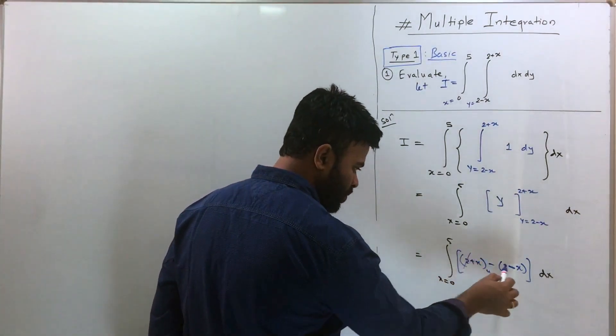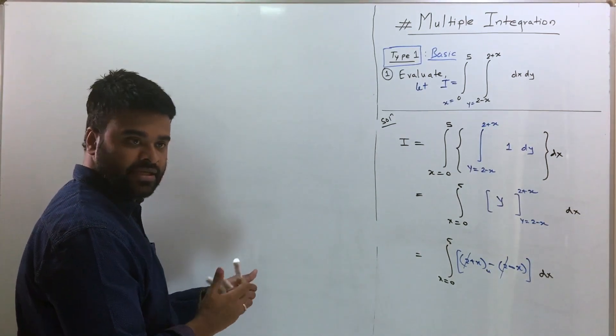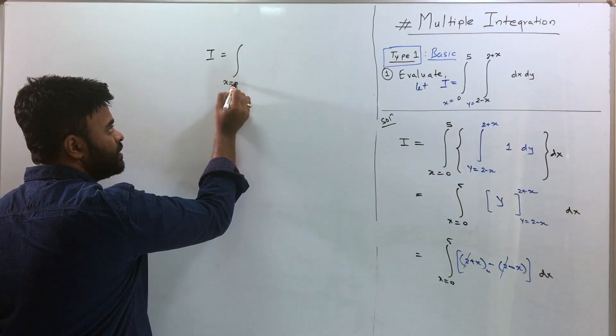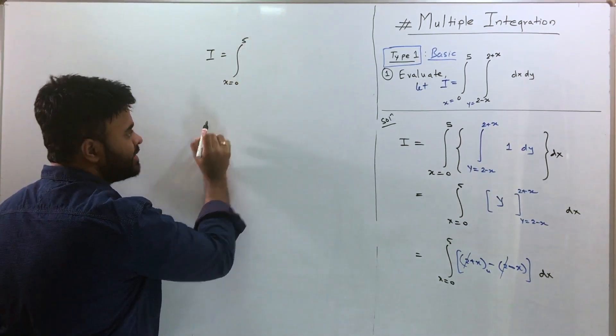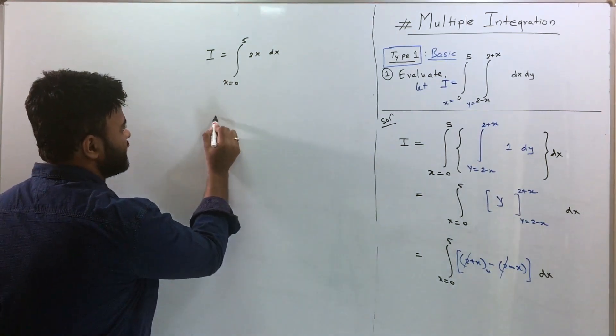Once you do that, you can cancel out 2 and X plus X is going to be 2X. So I get this I as integration X equal to 0 to 5, and this is 2X dx.